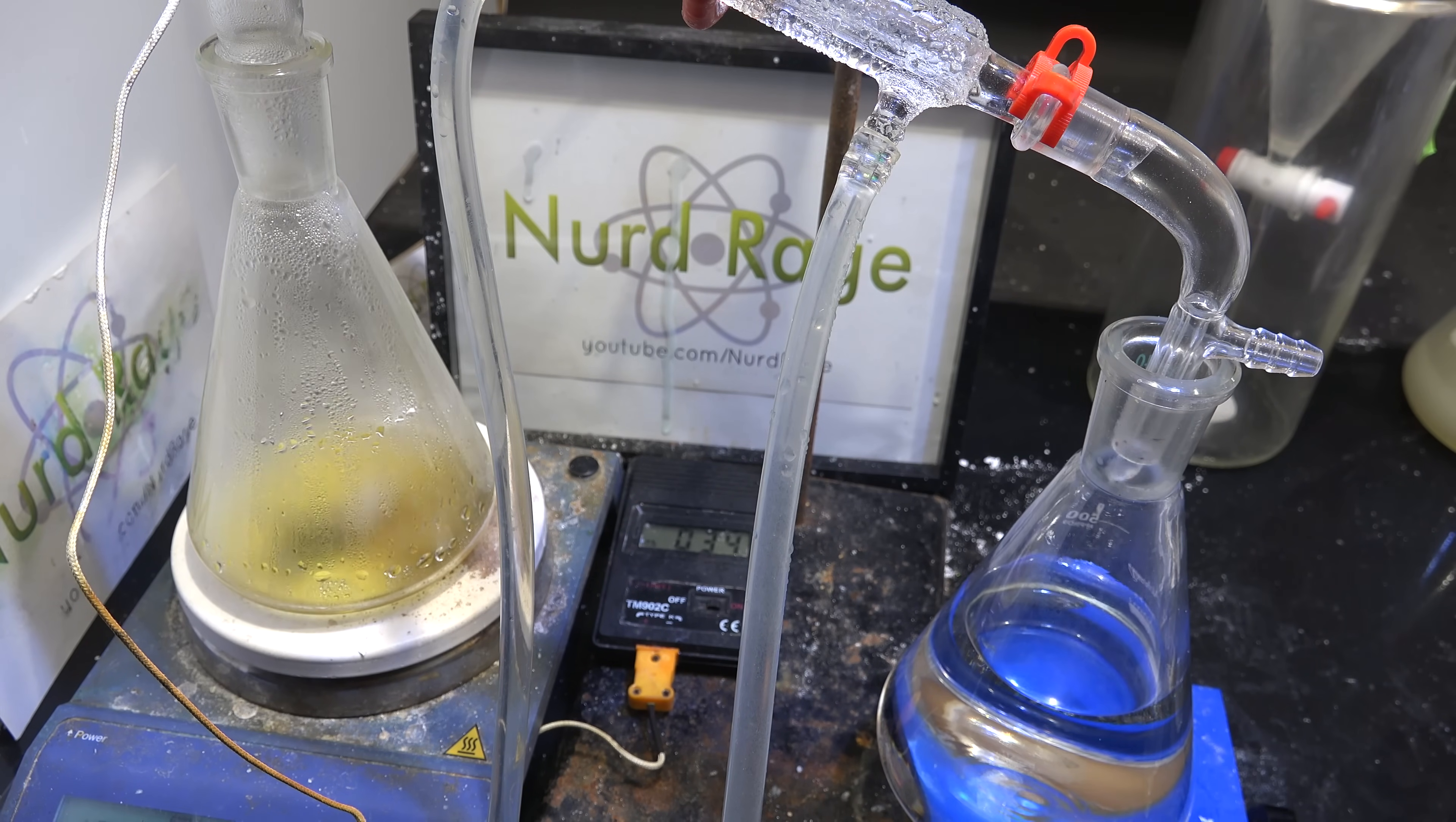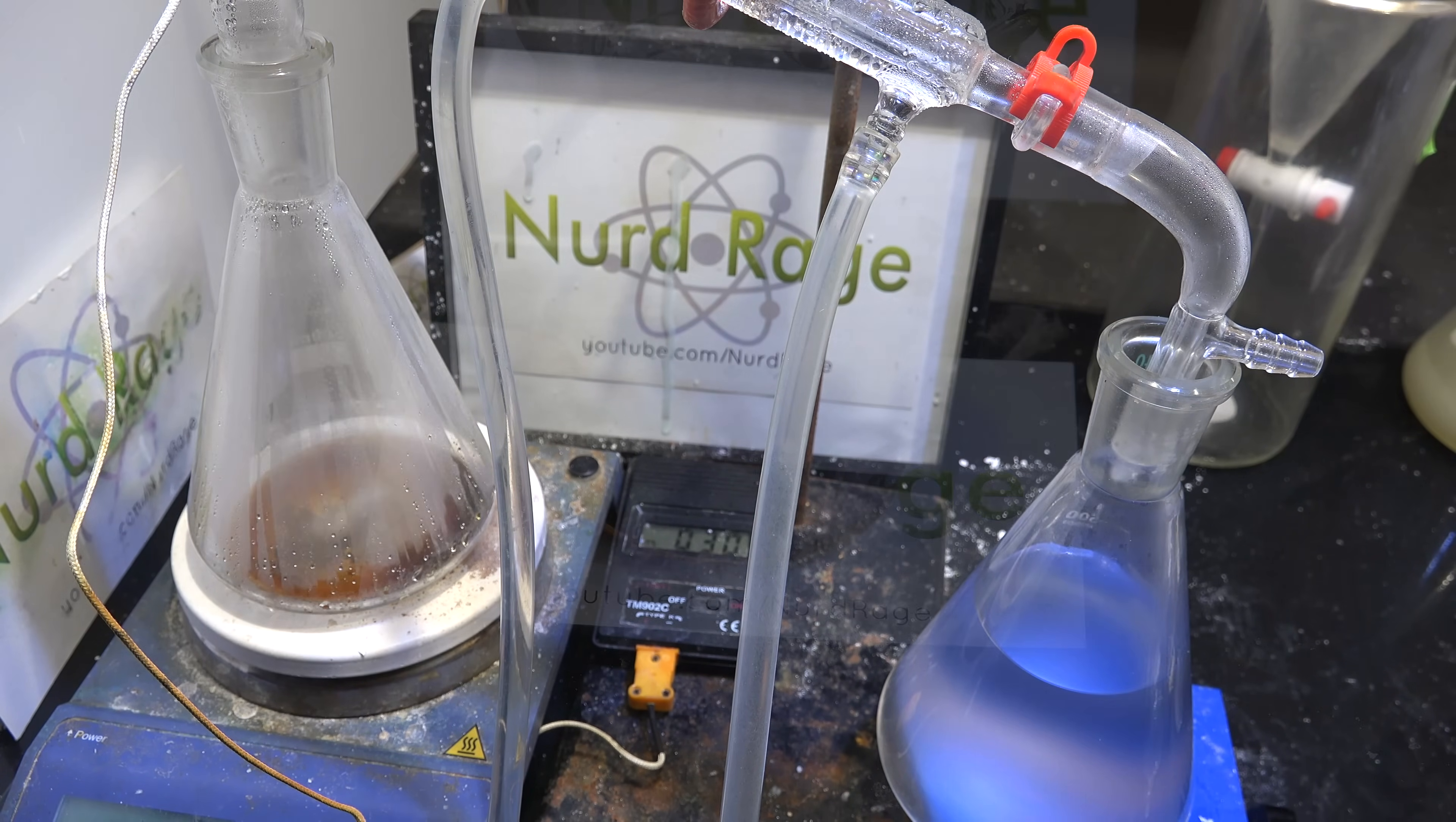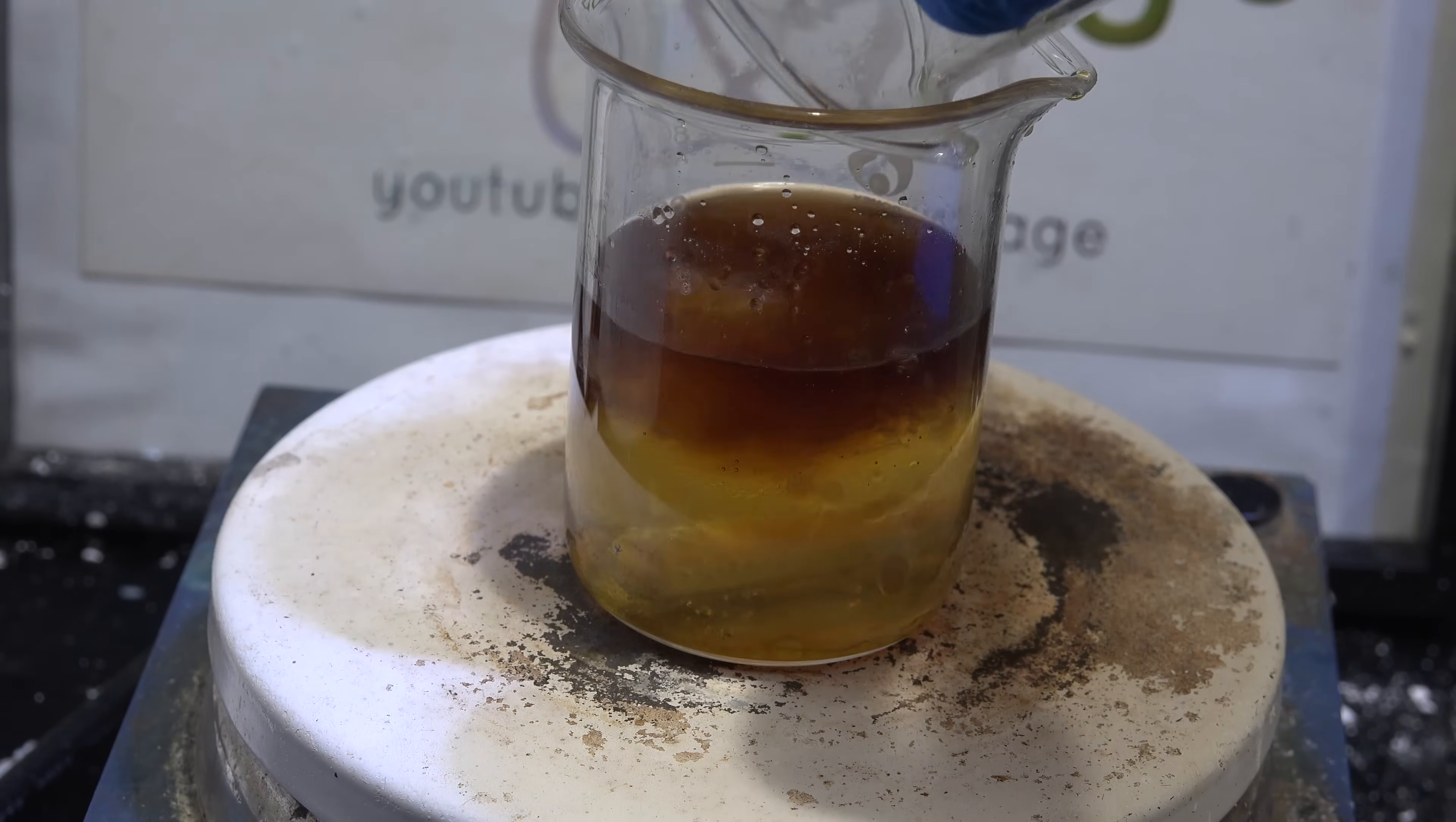Now I went a little too far with my distillation and charred my residue but this isn't a problem. Now at this point we have a syrup of gallium trichloride, residual water and ether. Gallium chloride actually binds ether pretty strongly so distilling it off is actually pretty hard. We need to get it back into water solution so add in about twice its volume of water.